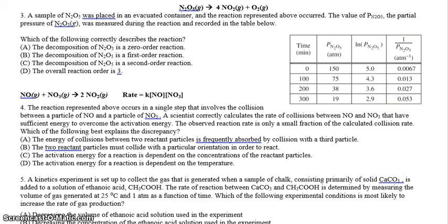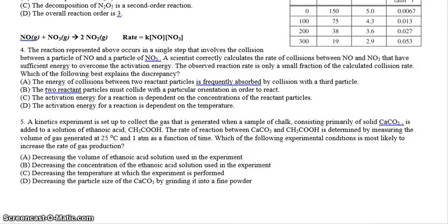How about number 4 and 5? These should be a little shorter as we wrap up. Number 4 says the reaction represented above occurs in a single step that involves the collision between a particle of NO and a particle of NO3. So you do see two different particles. A scientist correctly calculates the rate of collision. Remember, in order for a reaction to happen, particles must collide. And it says that they have sufficient energy to overcome the activation energy. The observed reaction rate is only a small fraction of the calculated collision rate. So we know they collide much faster than the actual reaction rate. We're asking, what explains that?